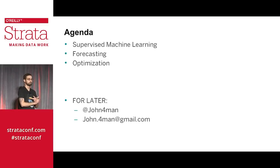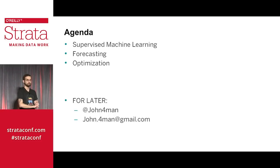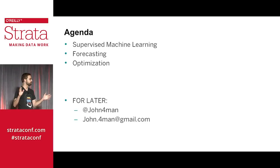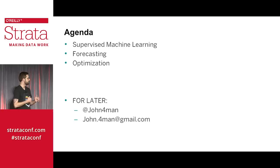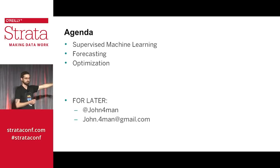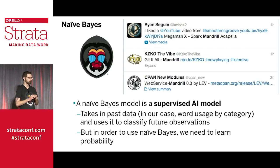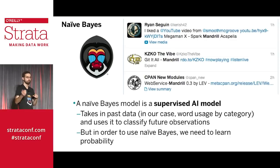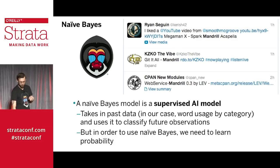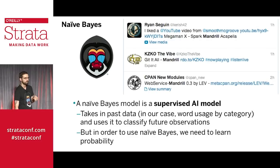The agenda: we're going to do some supervised machine learning, then some forecasting, then some optimization. In supervised machine learning we'll do Naive Bayes with a bit of natural language processing. The forecasting section will have optimization and simulation. Then optimization. For later questions, feel free to reach out on Twitter or email. Let's get started — if you didn't download the spreadsheets, there are USB drives at the front table. Grab one and copy the spreadsheets to your computer and work along.